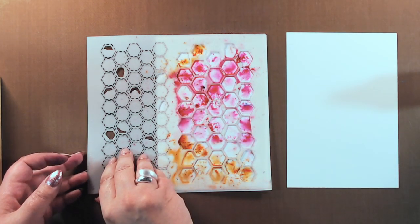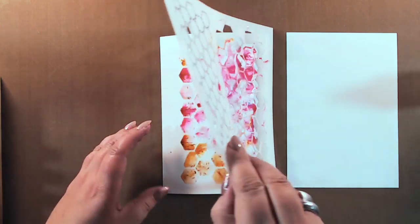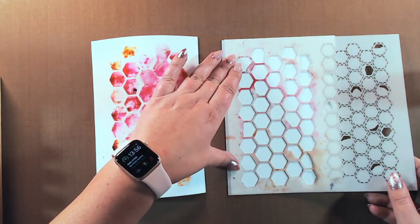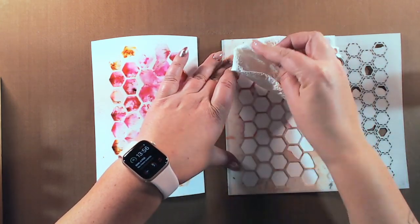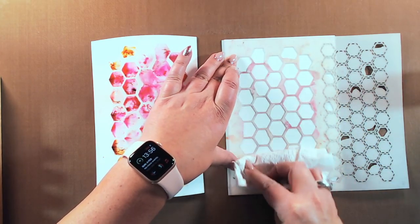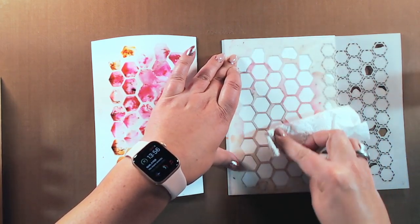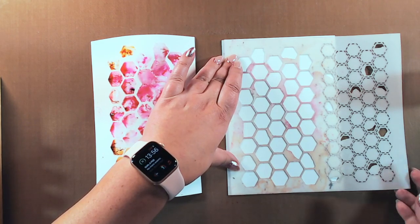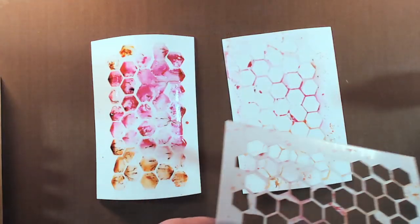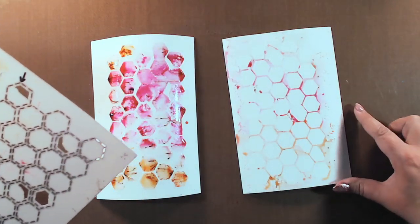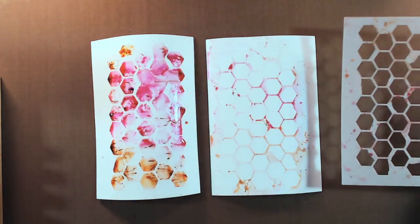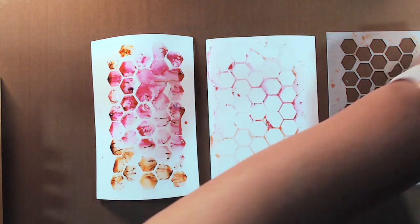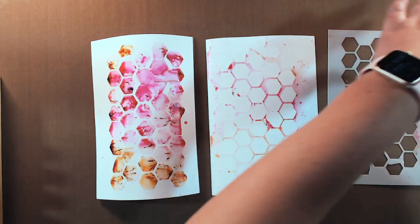You might think the stencil will not be visible, but it is. It's actually easier to spray with these than with color sprays because your color spray will seep everywhere. Here you might have water everywhere but not color everywhere. The print left on the stencil is at least as yummy as the first print itself.